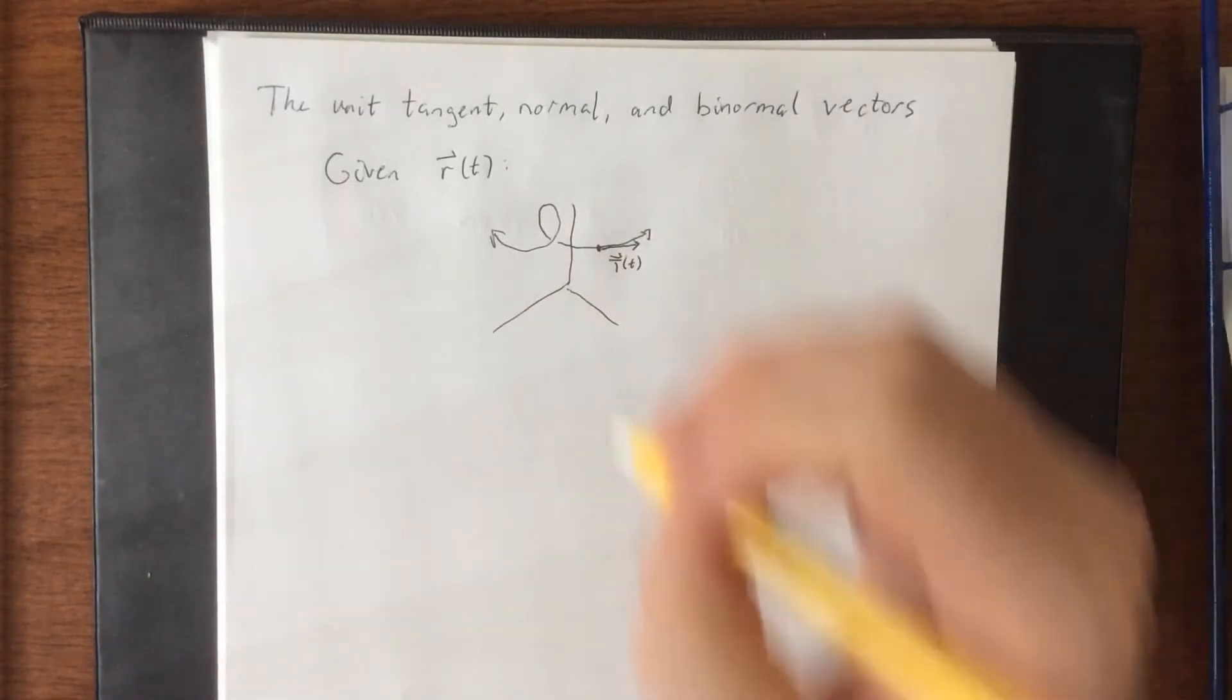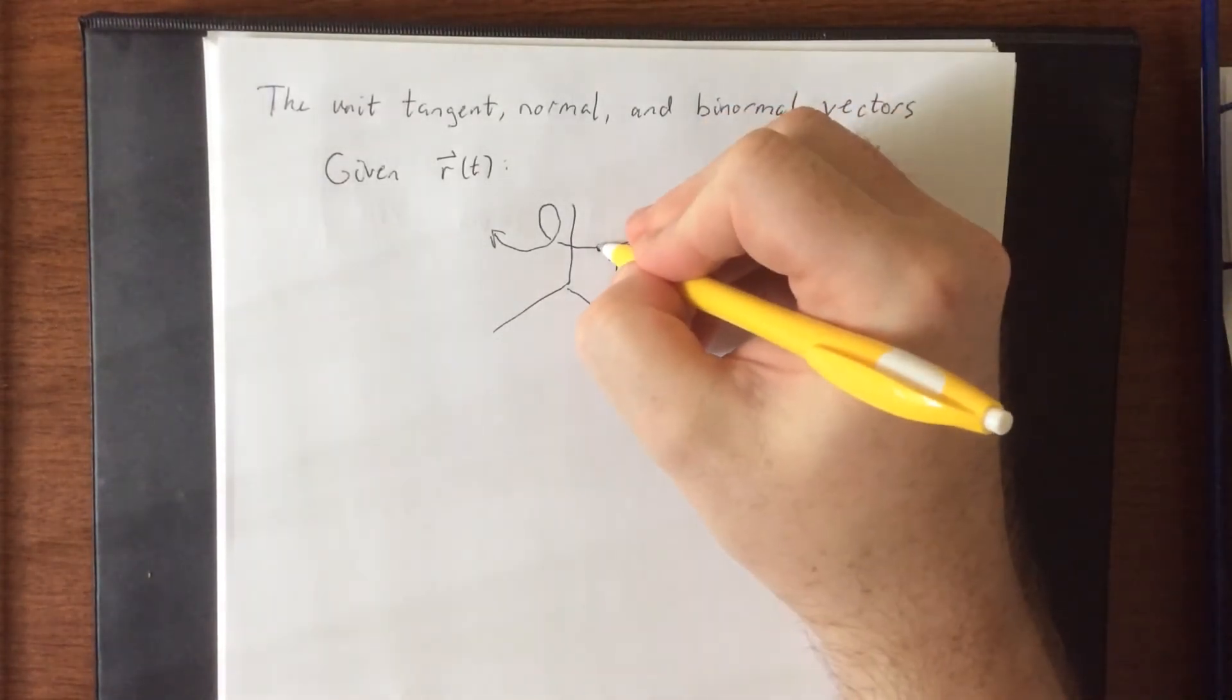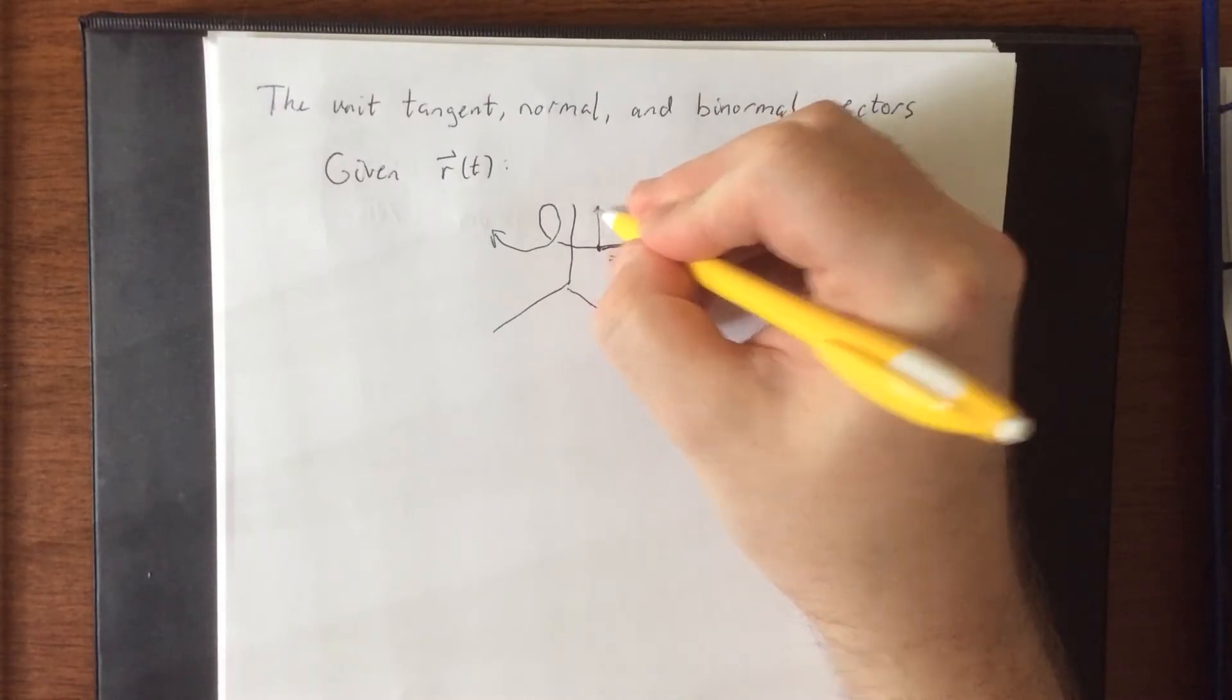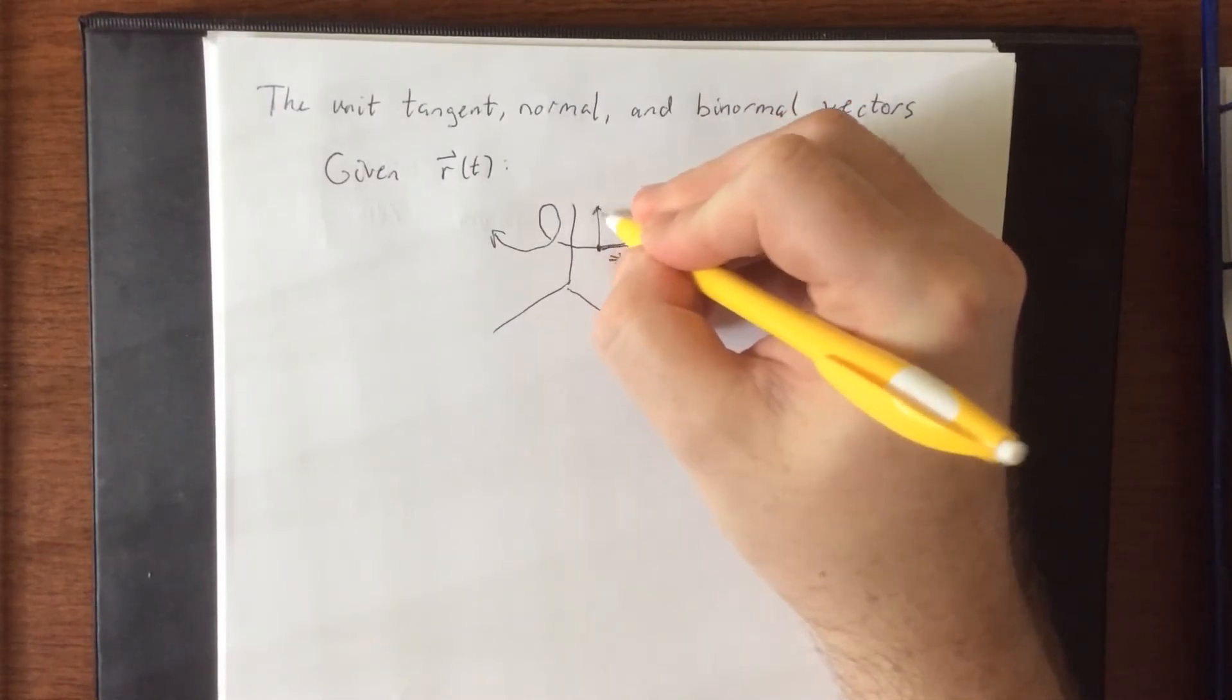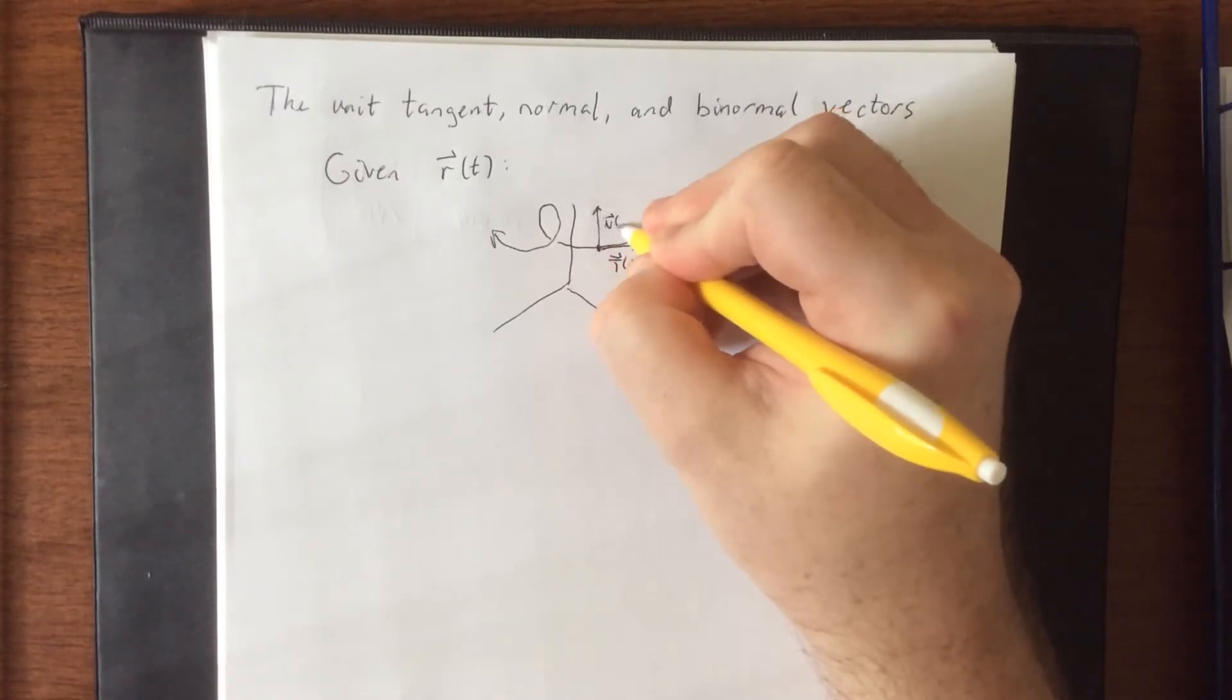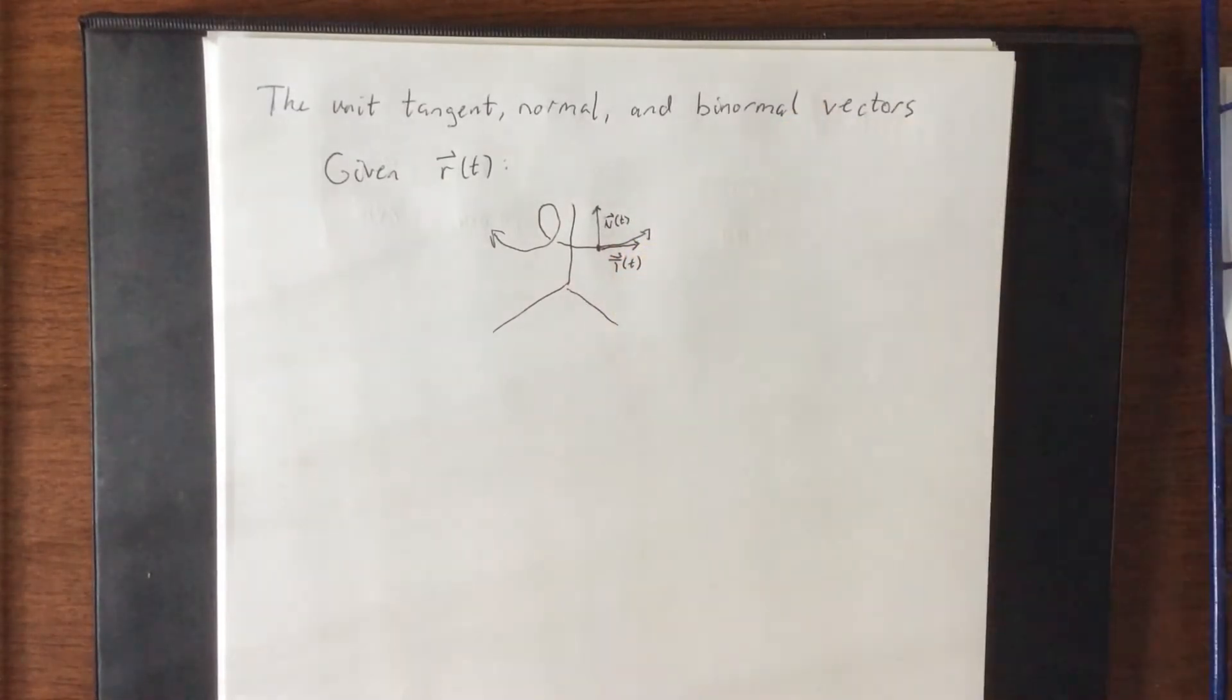The normal vector is something that is orthogonal to the tangent vector and usually indicates a form of the acceleration of the particle as it would go along this curve.